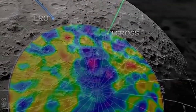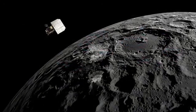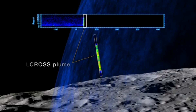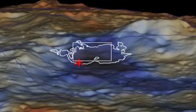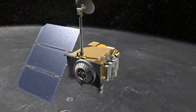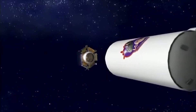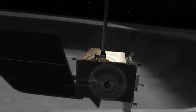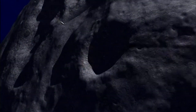The LCROSS spacecraft, following closely behind, analysed the ejecta before it too impacted the surface. The debris plume was also analysed by NASA's Lunar Reconnaissance Orbiter, or LRO. Instruments detected water ice, along with other volatiles, confirming that significant amounts of frozen water exist in these permanently shadowed regions. This discovery was a major milestone, strengthening the case for future lunar exploration and resource utilisation, including human missions and potential in-situ resource use. LCROSS provided concrete evidence that the moon holds accessible water, which could be critical for sustaining long-term lunar bases.